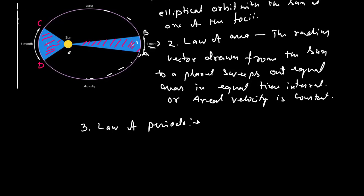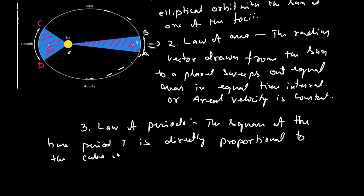The third law is known as the law of periods. The square of the time period T is directly proportional to the cube of semi-major axis. That is, T square is directly proportional to R cube. So this is known as law of period. This is known as major axis, and half of this is semi-major axis, taken as R. And this is known as minor axis.